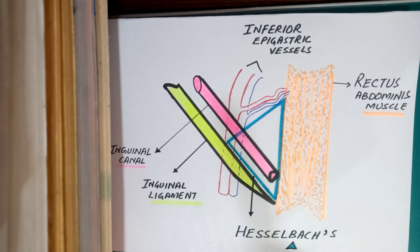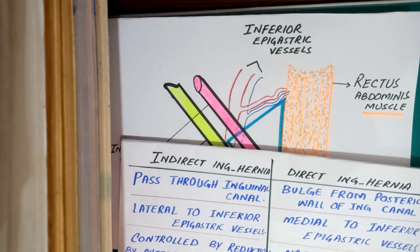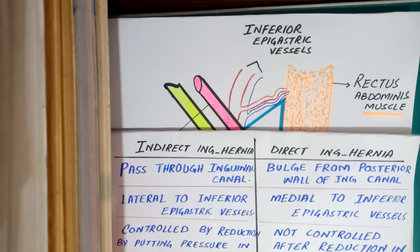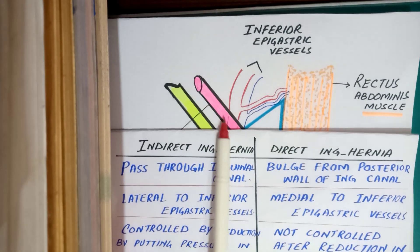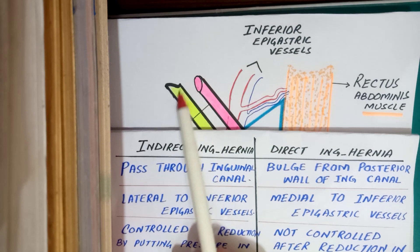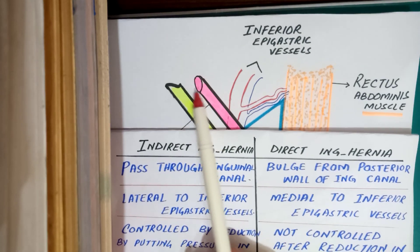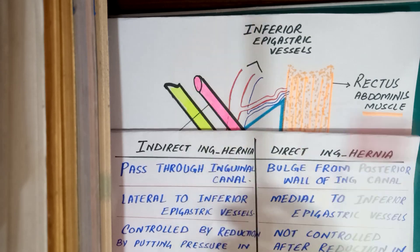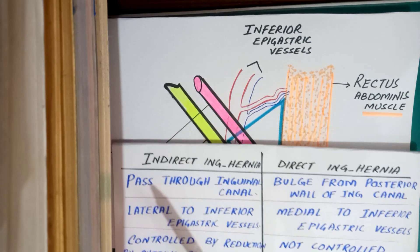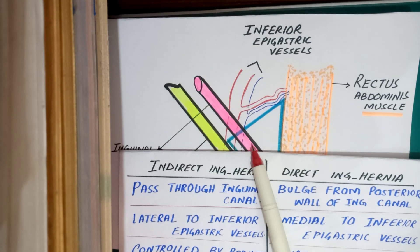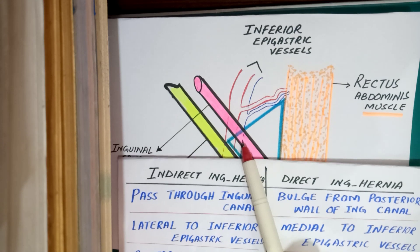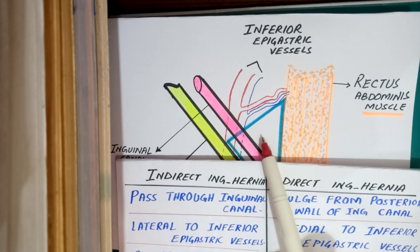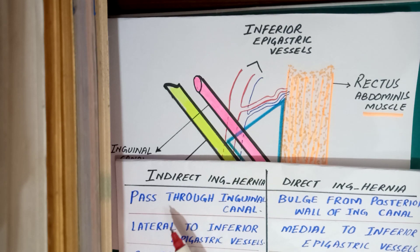Now let's recall the differences between direct and indirect inguinal hernia. Indirect inguinal hernia passes through the inguinal canal, while direct inguinal hernia passes through the posterior wall of the inguinal canal — meaning it passes through Hesselbach's triangle.